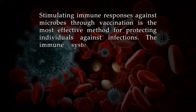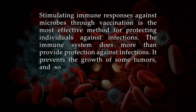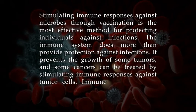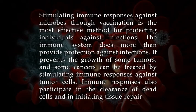The immune system does more than provide protection against infections. It prevents the growth of some tumors, and some cancers can be treated by stimulating immune responses against tumor cells. Immune responses also participate in the clearance of dead cells and in initiating tissue repair. In contrast to these beneficial roles, abnormal immune responses cause many inflammatory diseases with serious morbidity and mortality. The immune response is the major barrier to the success of organ transplantation, which is often used to treat organ failure. The products of immune cells can also be of great practical use.